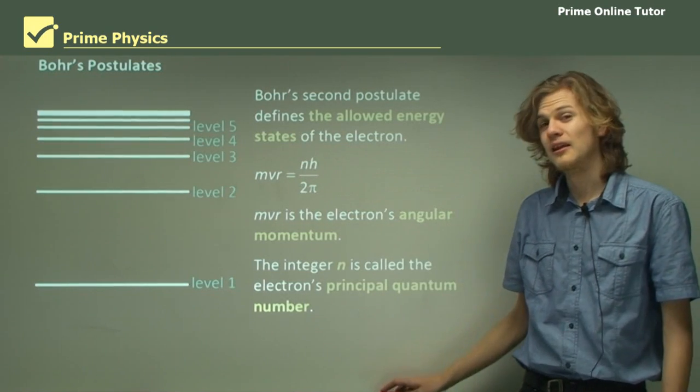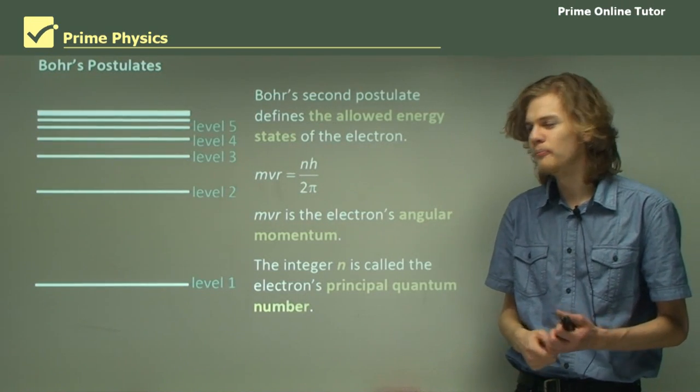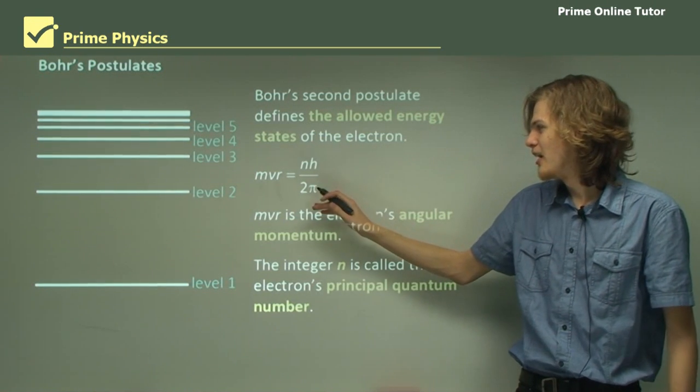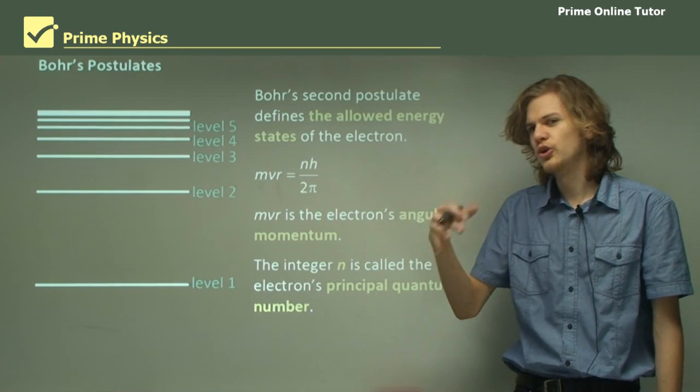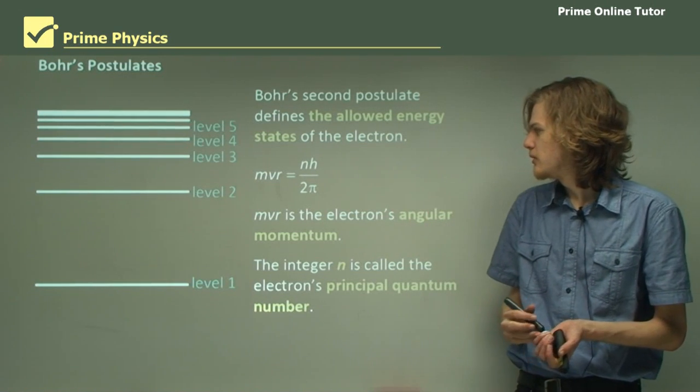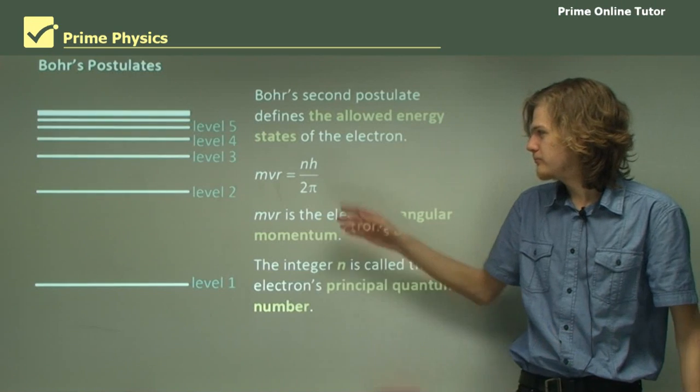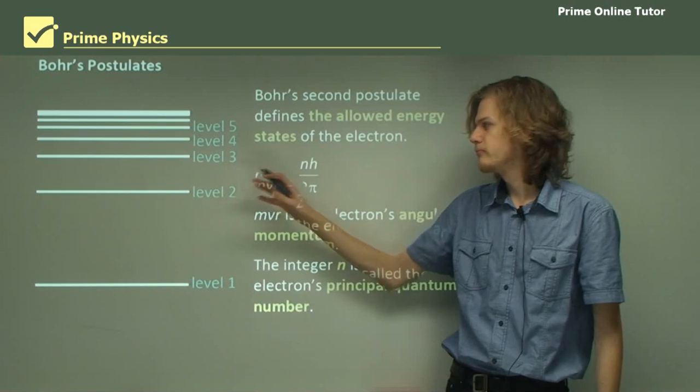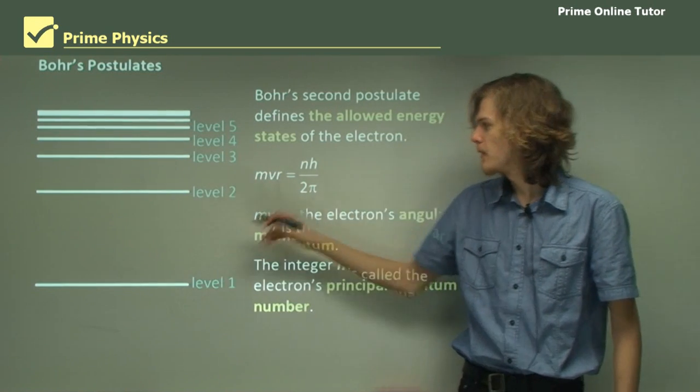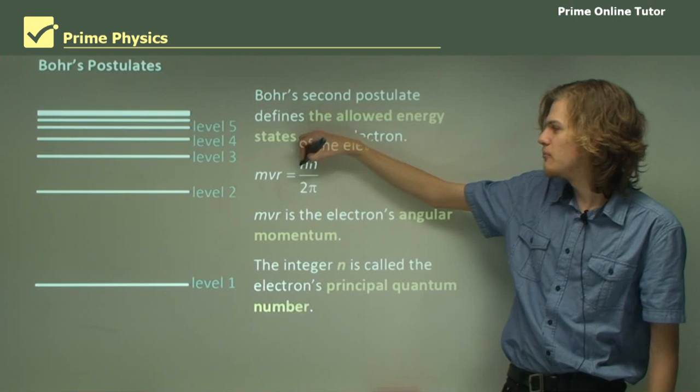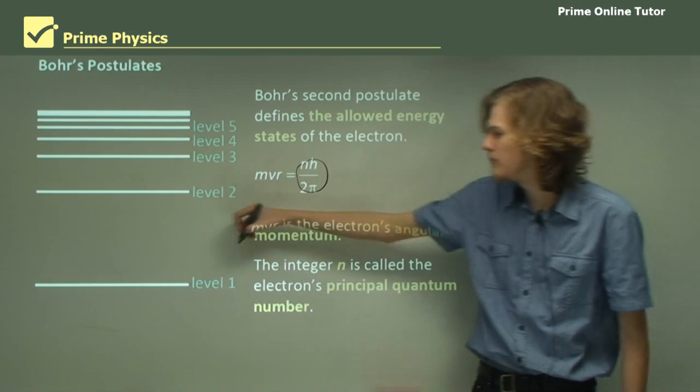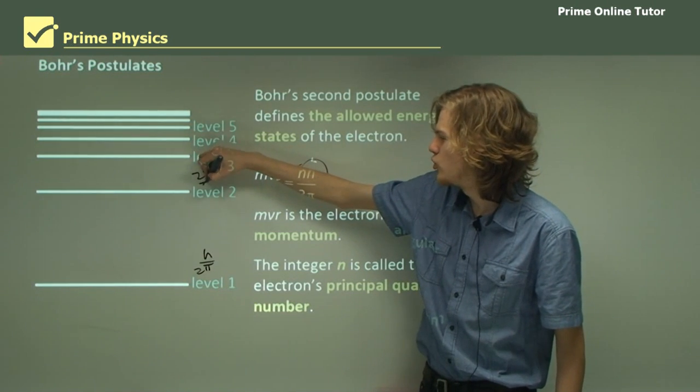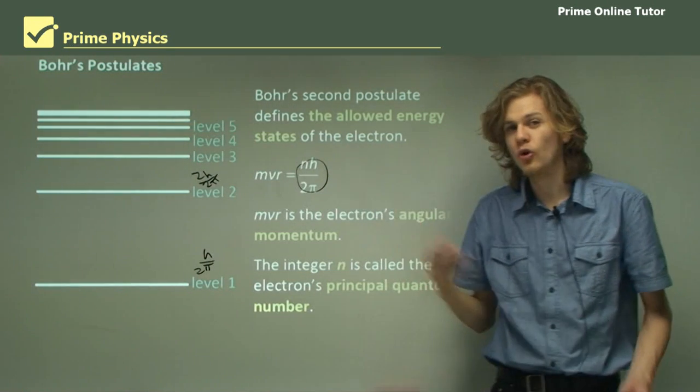We can see that there are a few other letters in here, so I'll just quickly go through them. h is Planck's constant, which you should be familiar with by now. Pi is the circle number, 3.14-ish. And so this means that the quantum number of the bottom energy level is 1. And so the angular momentum here will be given by this expression. So this will be h over 2 pi. This will be 2h over 2 pi, and so on and so forth.